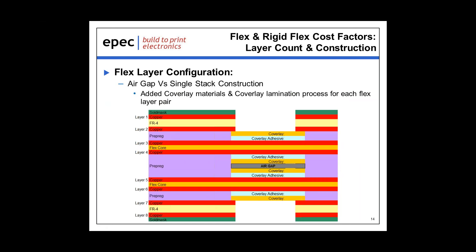Another item with a lesser but still important impact is the configuration of the flex circuits. In this eight-layer design, the flex circuits are configured as two individual pairs with an air gap in between them — the two pairs are not laminated or interconnected to one another. This improves flexibility but does have a bearing on cost, as there are additional coverlay requirements for each individual pair along with the associated lamination processes.